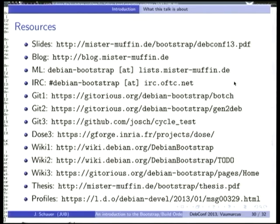Resources: the slides can be downloaded from the link shown, so you don't need to type everything down. There is my blog where I occasionally write about this kind of stuff. The mailing list — because a cross-compilation mailing list was missing. Our IRC channel. Git repositories with the software. The wiki pages — the to-do page is specifically of interest because it lists lots of things that need to be done for this to be possible in practice, like build profiles and so on. And my thesis for a really in-depth explanation of all of this, and threads about build profiles on Debian devel.